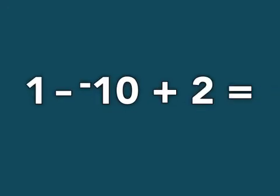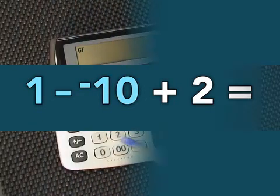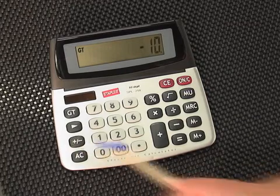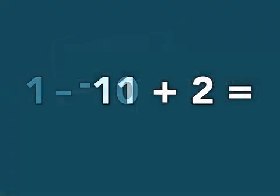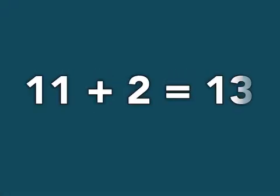Third, calculate the addition and subtraction from left to right. 1 minus negative 10 equals 11. And 11 plus 2 equals 13.